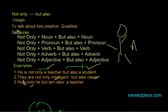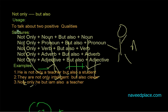So let's see the structures. The first structure is: not only + noun, but also + noun. So we have 'not only teacher' and then 'but also' and then a noun. Then we have the adjective structure: 'they are not only intelligent' — adjective — 'but also clever' — also adjective. Then we have the pronoun structure: 'not only he' — pronoun — 'but also I' — pronoun — 'and also a teacher'.